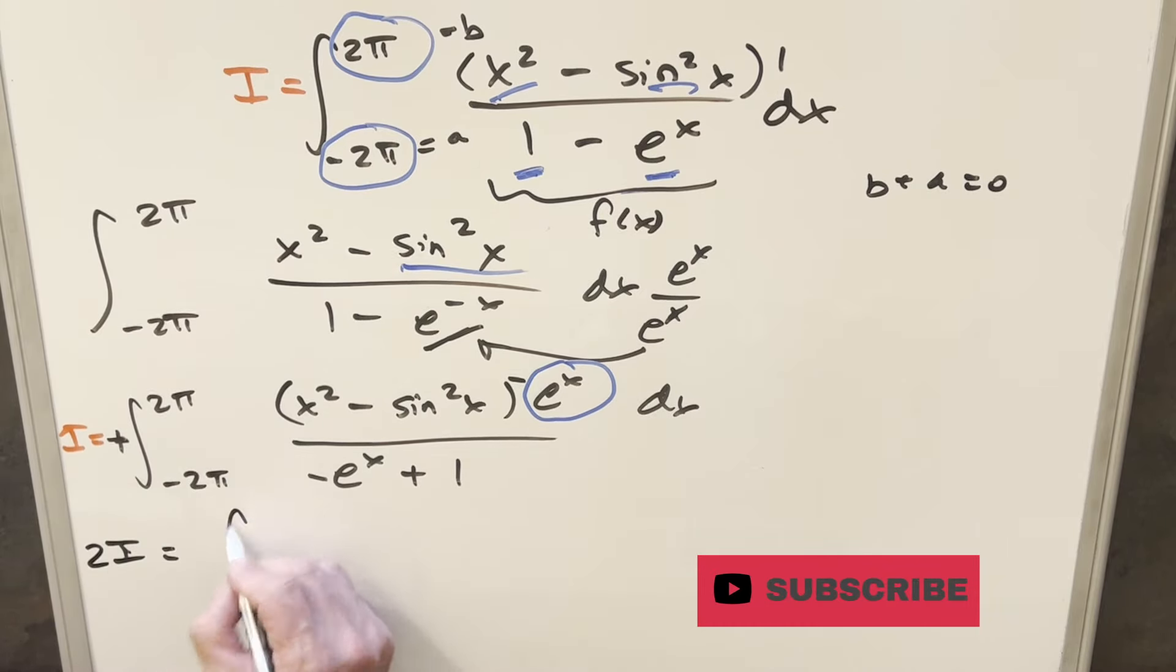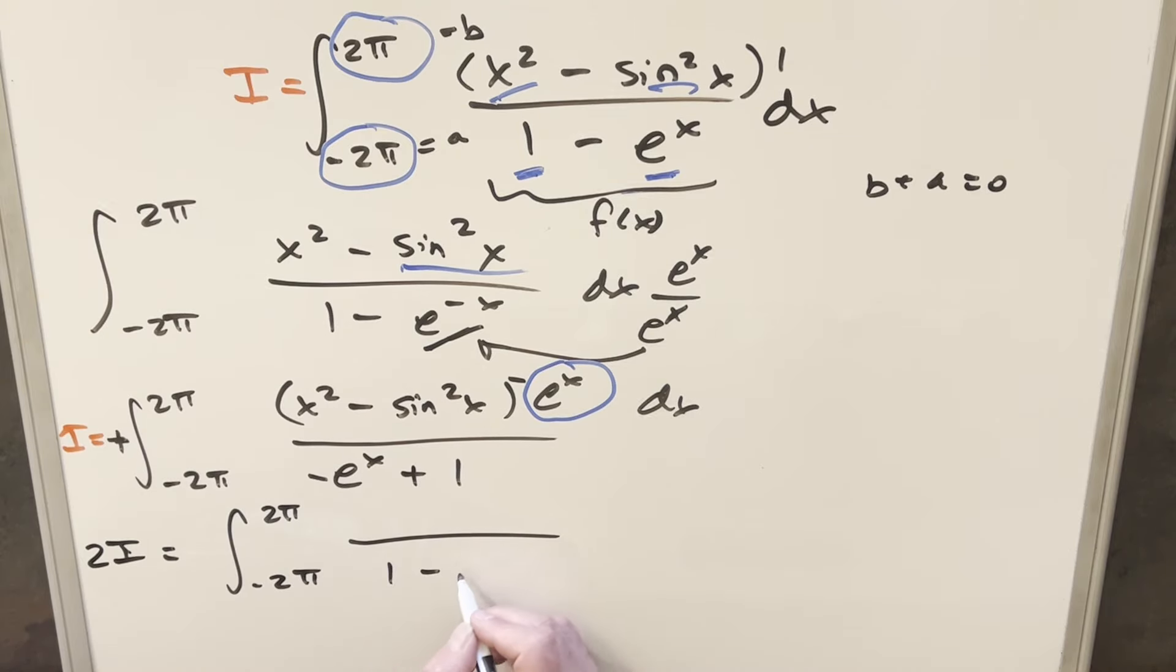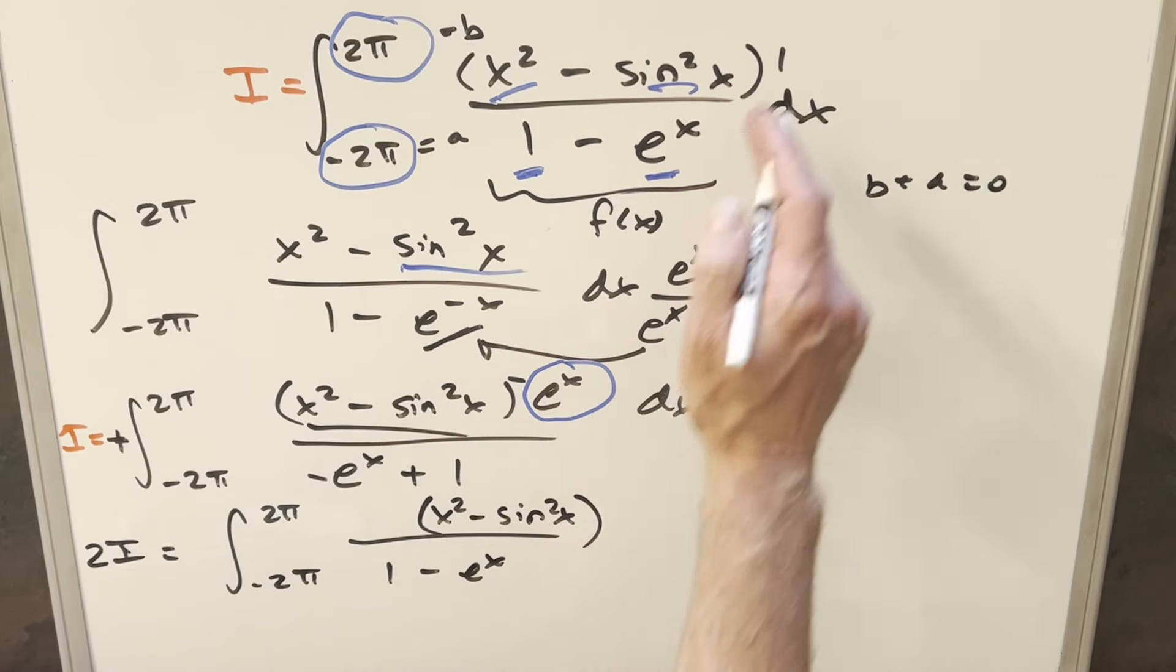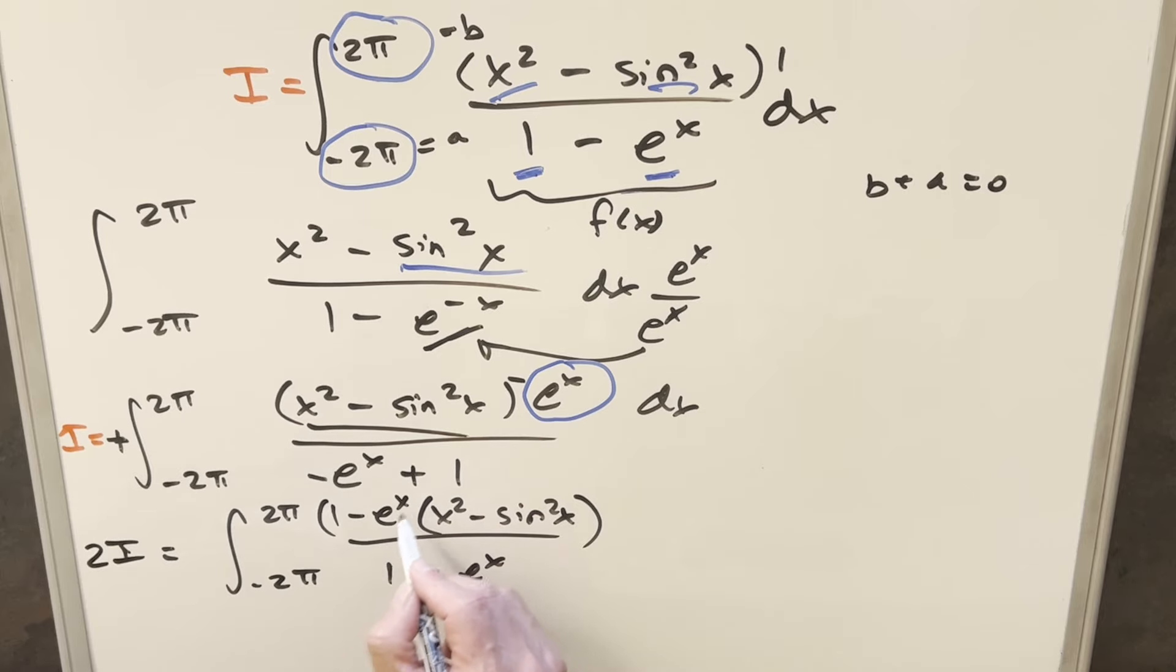So for our 2I, what's going to happen? We have the same bounds on everything. Then we have the same denominator, and we have this part in common, x² - sin²x. But now putting together, we have 1 copy minus e^x copy. I can write this as 1 - e^x here.